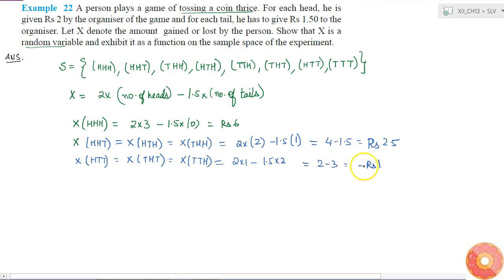Minus 1 rupee means that the person has lost 1 rupee. And X of all three tails will be 2 times 0 minus 1.5 times 3 which will be minus 4.5 rupees.